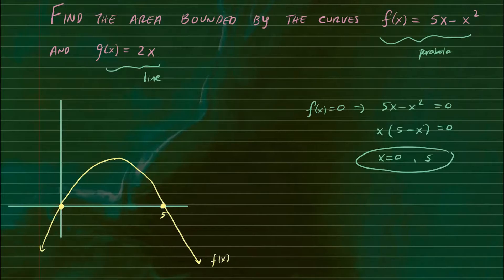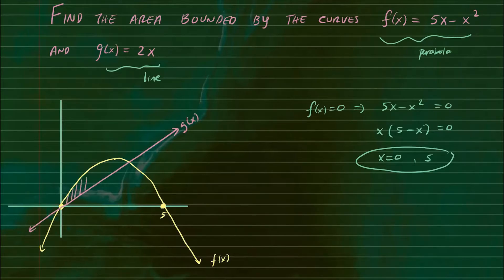Now g of x is 2x, so that's just a line passing through the origin. The region both curves bound is this region right here — that's the area we're looking for. You can see there are intersections at two points. One place they both pass through is zero, so we just need to find out what the other intersection point is.